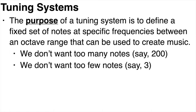The purpose of a tuning system is to define a fixed set of notes at specific frequencies between this octave range that can be used to create music. Ideally, we don't want too many notes. If we subdivided the octave into, say, 200 notes, it would be difficult to use, and because the notes would be so close together, two adjacent notes would sound almost identical. But we also don't want too few notes. If we subdivided the octave into, say, 3 notes, the music we could create would be pretty boring. For historical and mathematical reasons, we've landed on having 12 notes per octave.